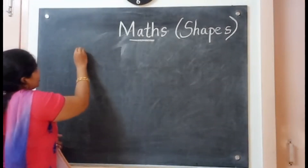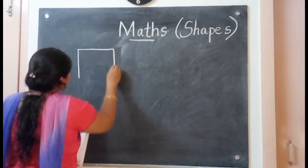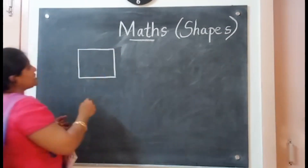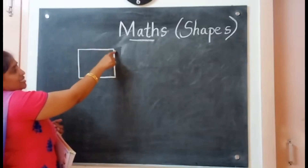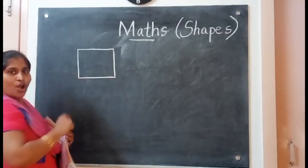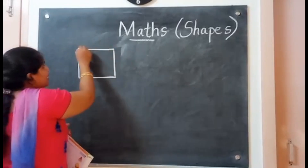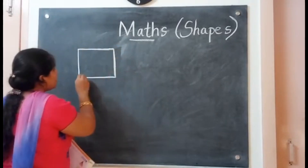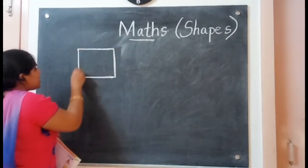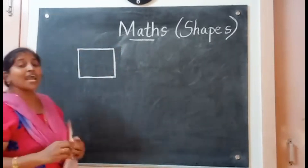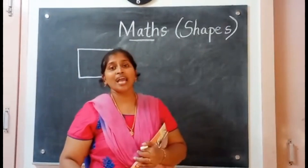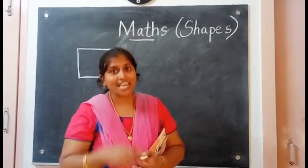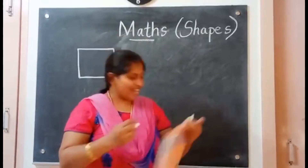The first one is square. What is this? This is a square. It has four sides — one, two, three, four. All the sides are equal. Square has four sides and all the sides are equal.